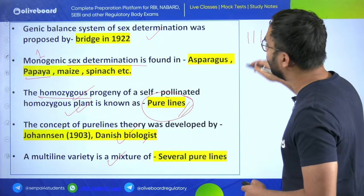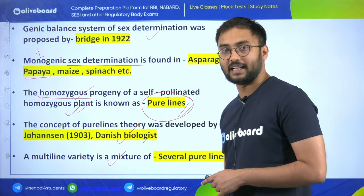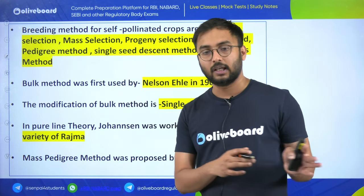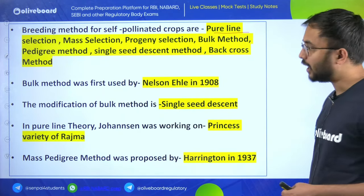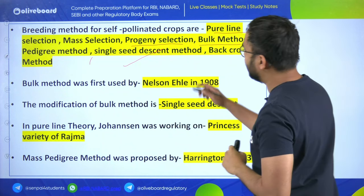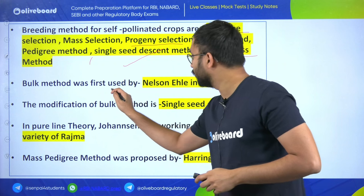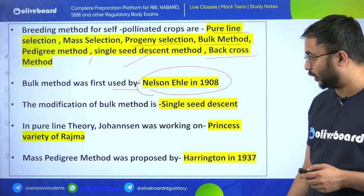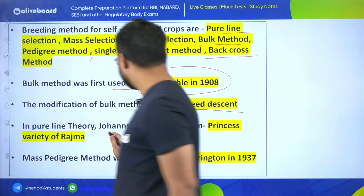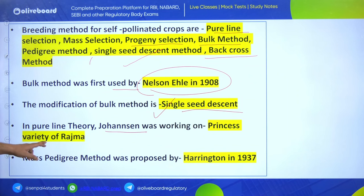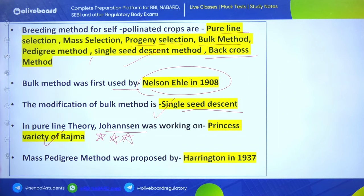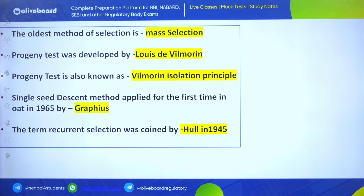Breeding methods for self-pollinated crops include pure line selection, mass selection, progeny selection, bulk method, pedigree method, single seed descent method, and back cross method. The bulk method was first used by Nilsson-Ehle in 1908. A modification of the bulk method is single seed descent. In pure lines theory, Johansson was working on the Princess variety of Rajma. Mass pedigree method was proposed by Harrington in 1937.